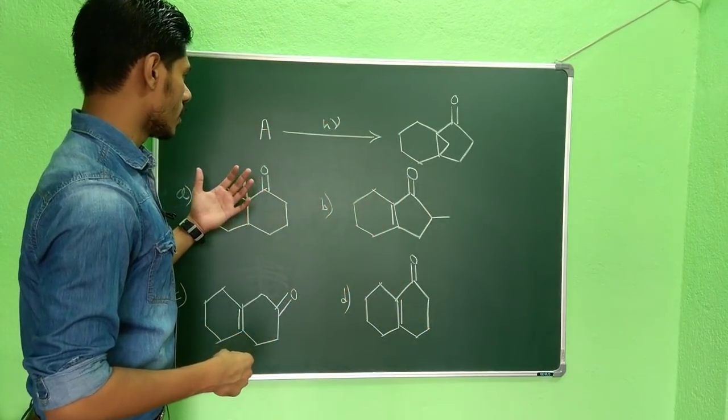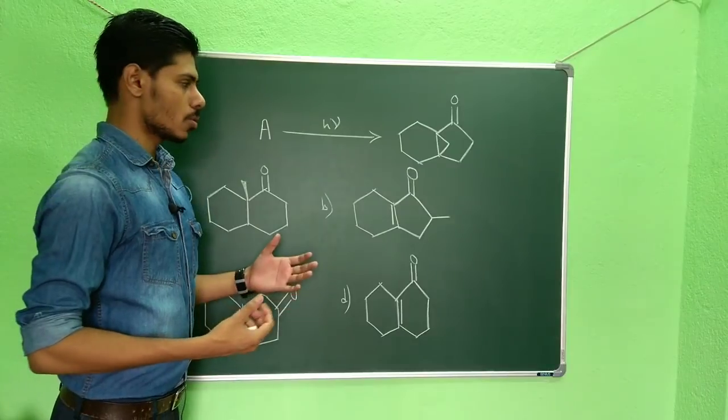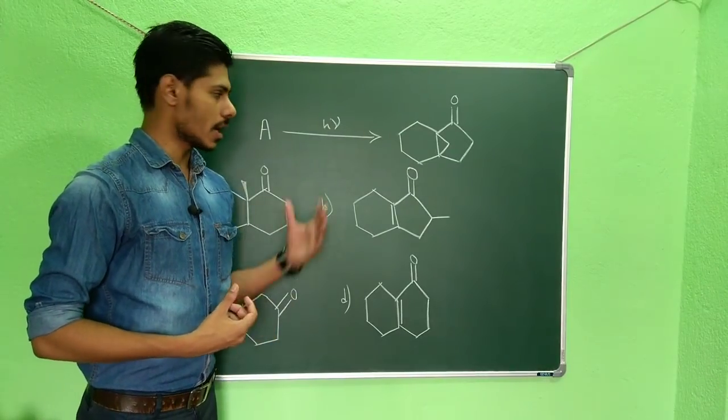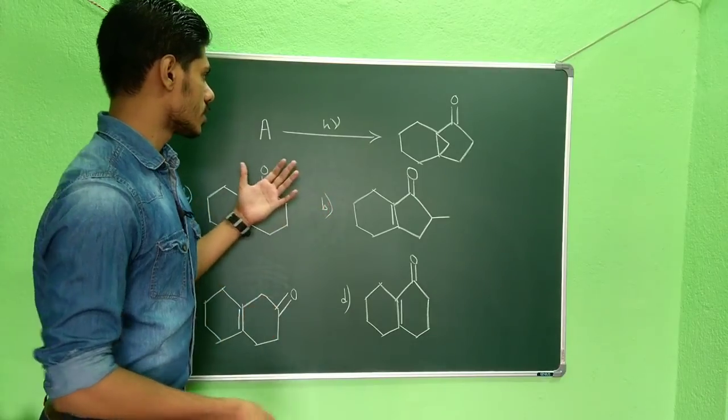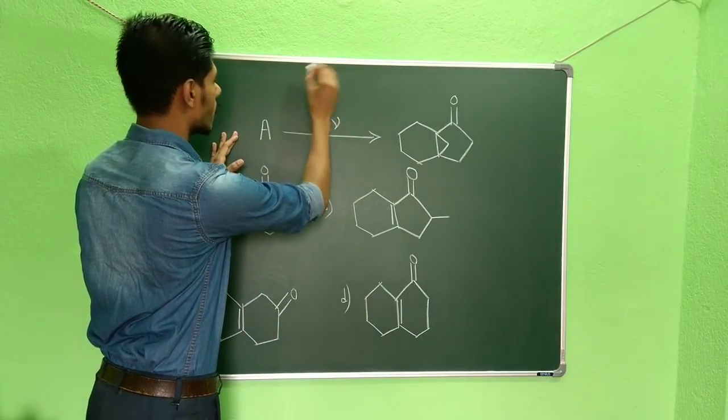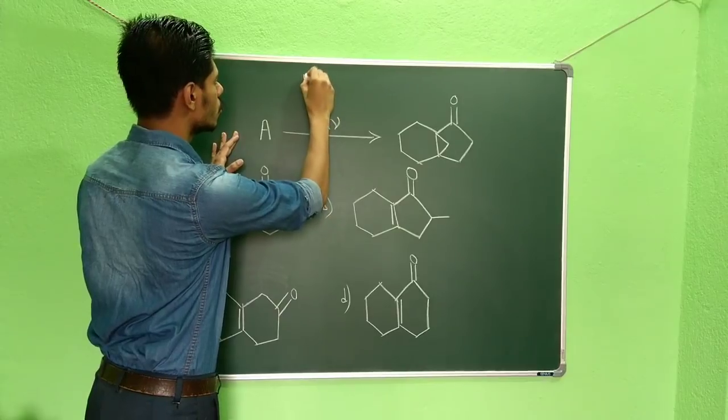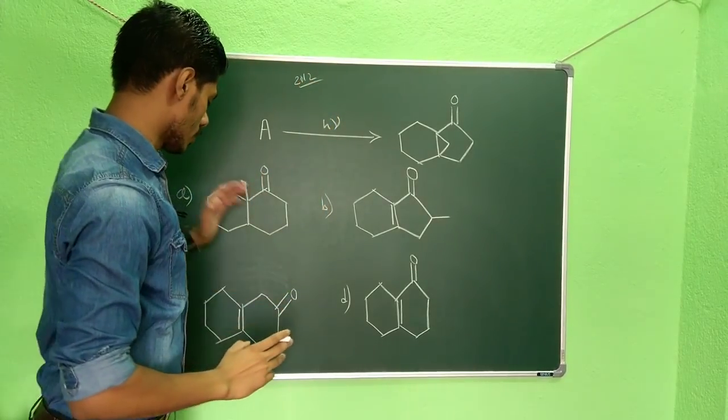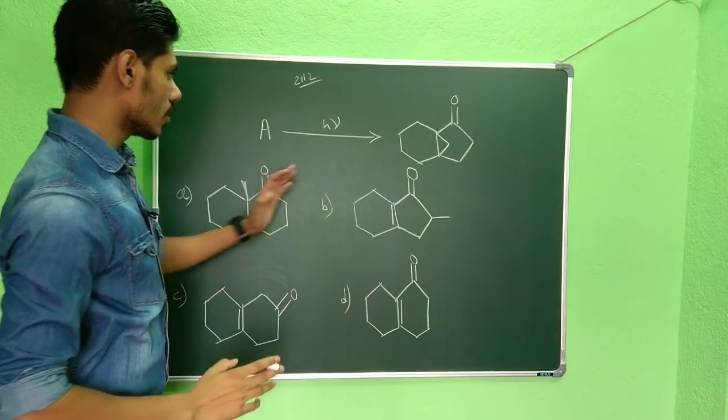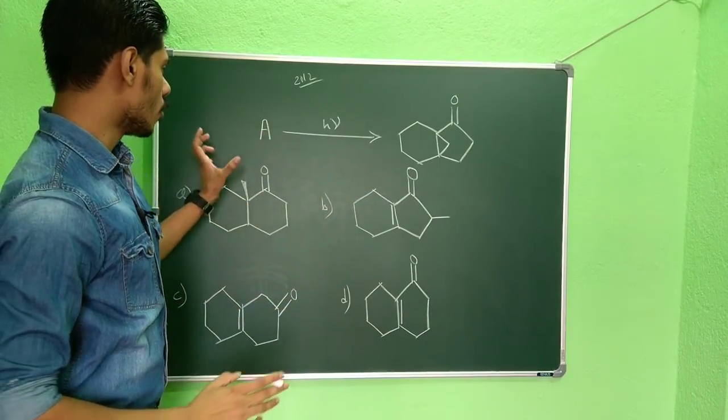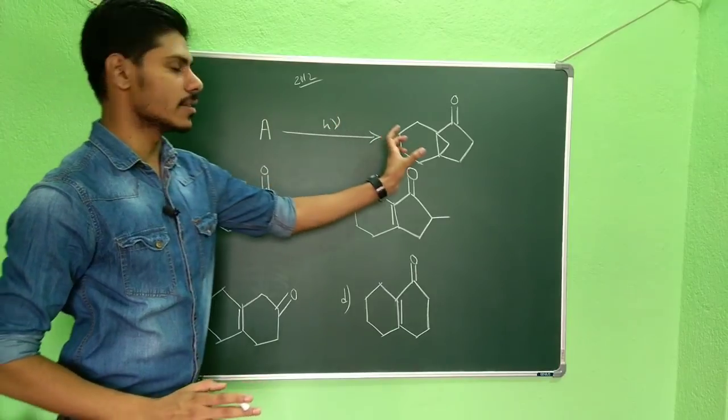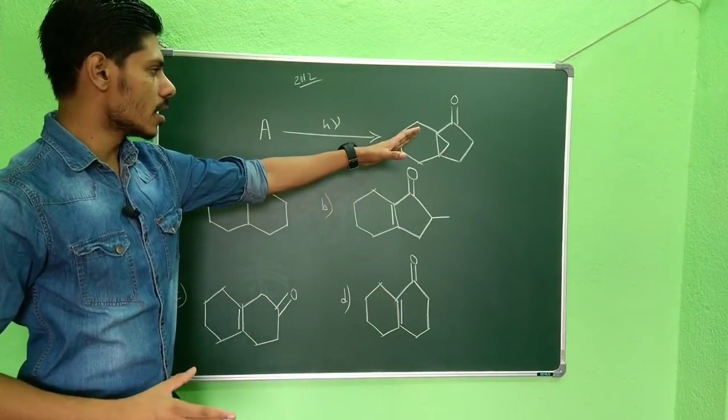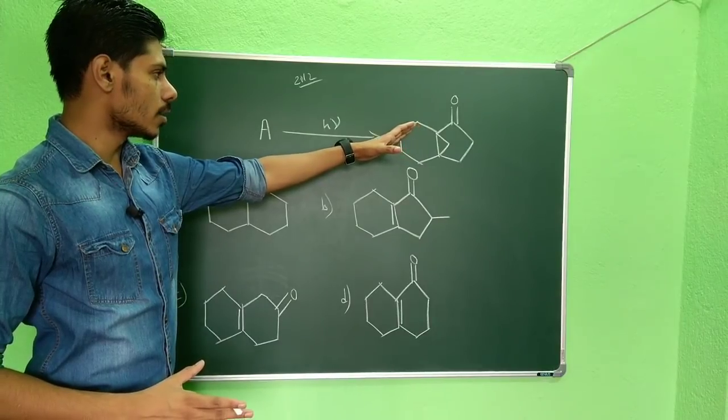So this is the question you can see, and it is a photochemical reaction. People have requested me to do some video on photochemistry and this is one example from CSIR NET exam, I think December or June 2012. This is the question you can see, all four options are given and you have to predict from which starting material you will get this product.